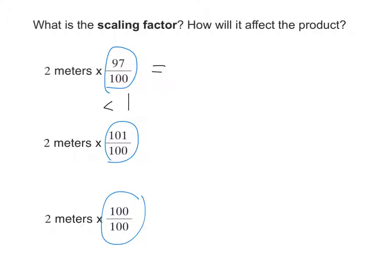So it's less than 1, which means the product, is it going to be less than 2 meters or more than 2 meters? Yeah, it will make the product get smaller than 2 meters. Let's try that. Let's just check. So 2 times 97 over 100. Well, I can divide both of those by 2. So my final answer is 97 over 50, simplified to be 1 and 47 over 50.